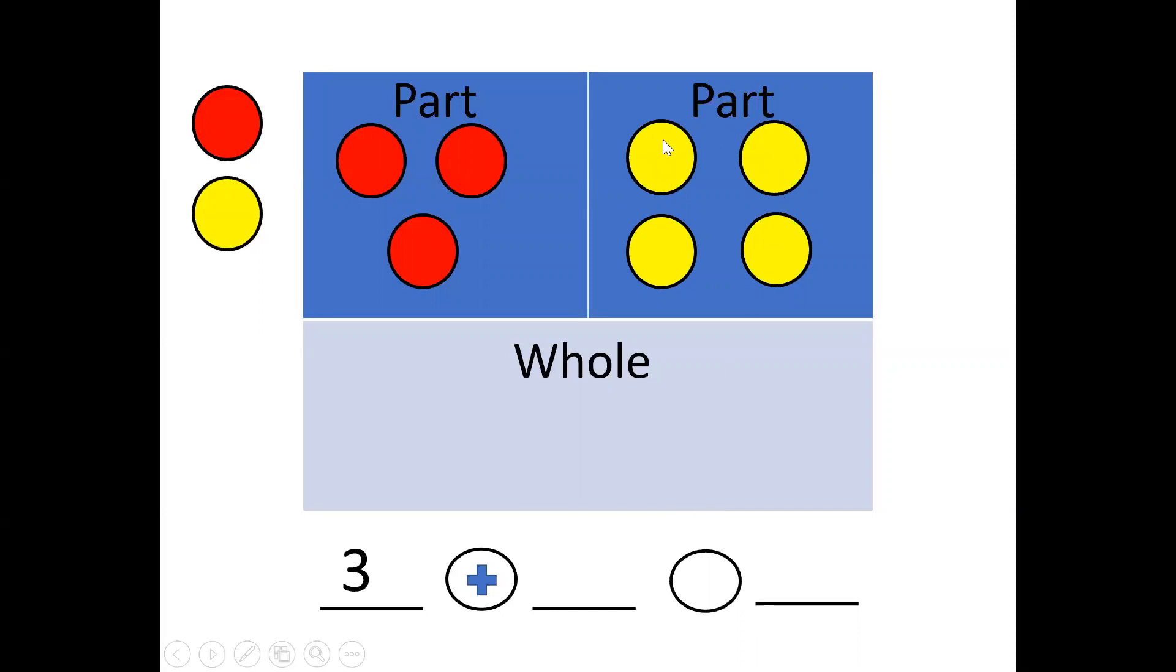We're going to take four yellow tiles, we've moved these over one, two, three, four. So then we needed to write the number four as the second part of our equation.